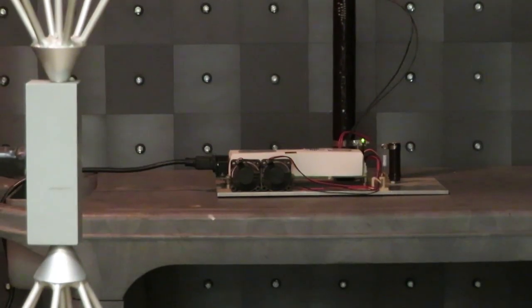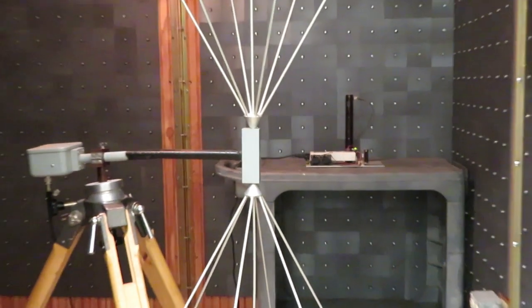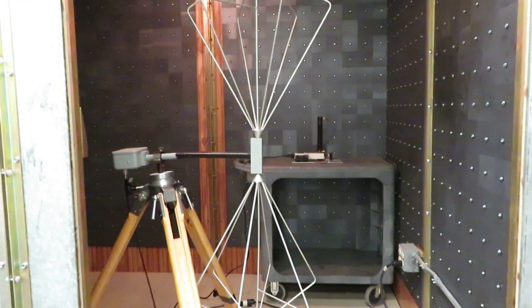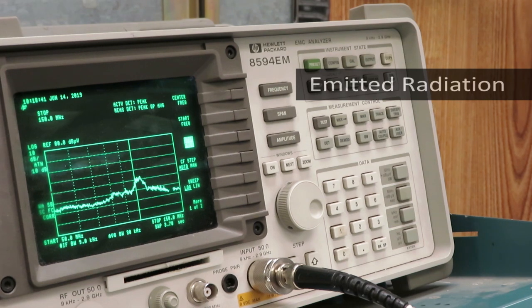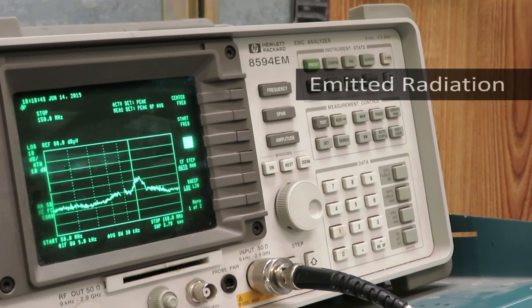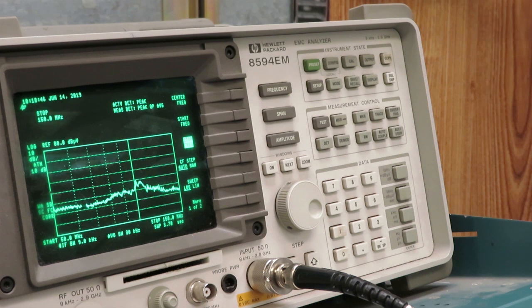It isolates the device under test from outside sources of radiation. The antenna will pick up any emitted radiation from the device. Connecting the antenna to a spectrum analyzer outside the chamber, we can see what frequencies the device is emitting and how strong they are.